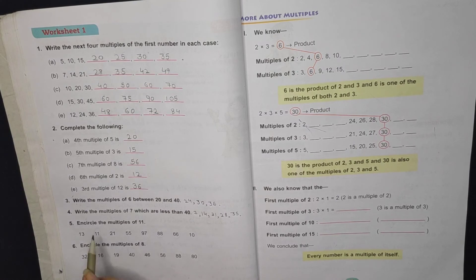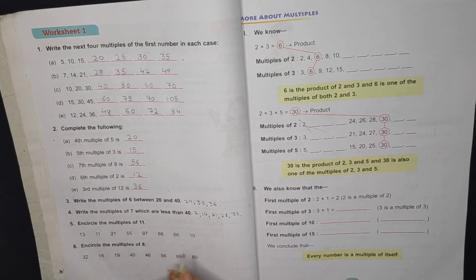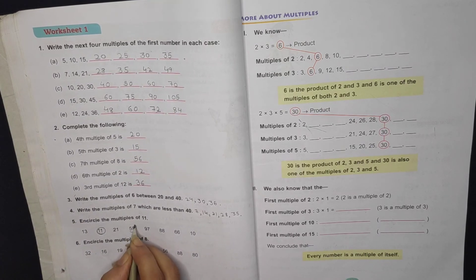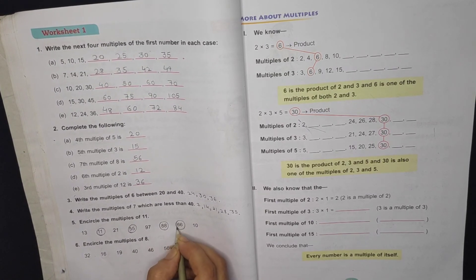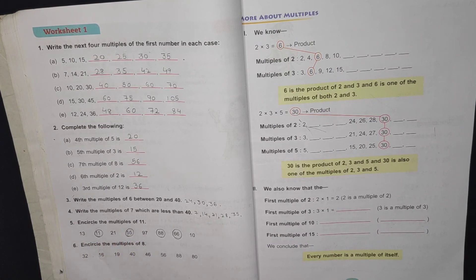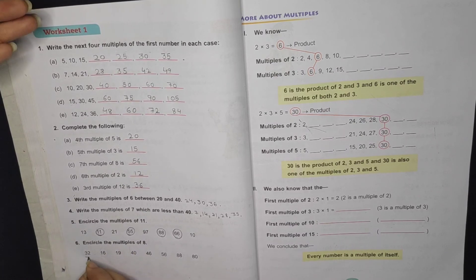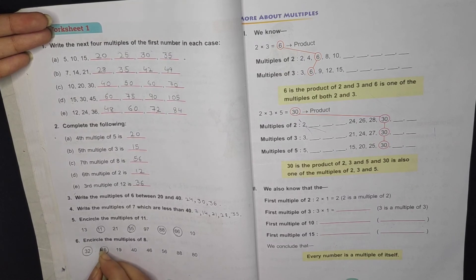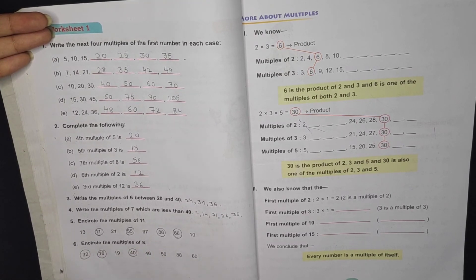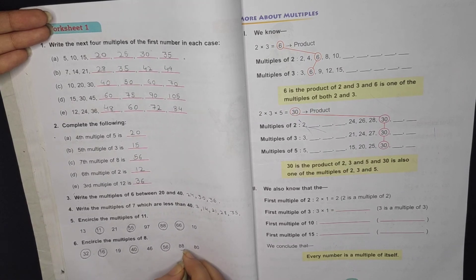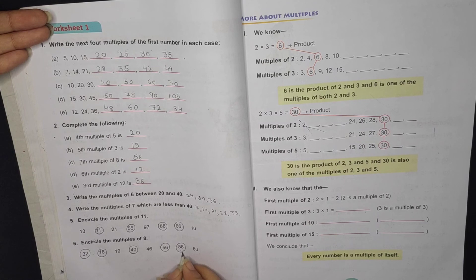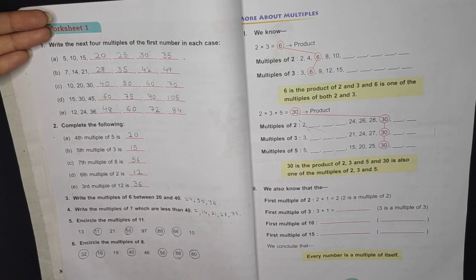Next, encircle the multiples of 11. Multiples of 11: 11 one time is 11, 11 times 5 is 55, 11 times 8 is 88, 11 times 6 is 66. So see, multiples of 11 which come in 11's table. Next, multiples of 8: 8 times 4 is 32, 8 times 2 is 16, 5 times 8 is 40, 7 times 8 is 56, 11 times 8 is 88, and 10 times 8 is 80.